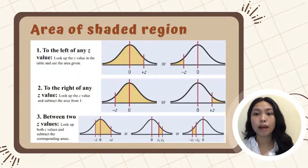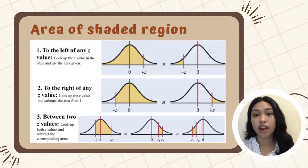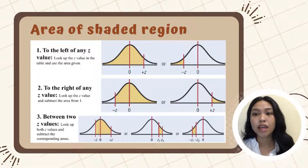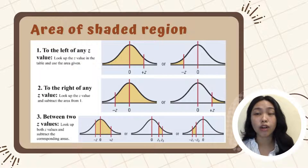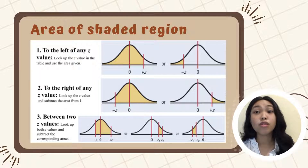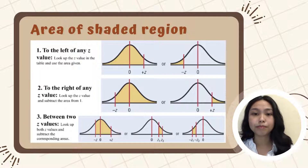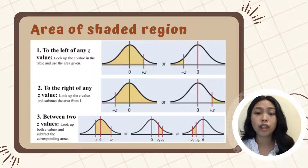Over here is a quick way or format to use in identifying which side or section is the shaded region in the area. First, kapag may term na 'to the left of,' 'lower than,' or 'less than,' ganito yung magiging representation niya. Para makuha yung area, kailangan lang natin hanapin yung corresponding Z-value dun sa table. Next, kapag 'to the right of,' 'greater than,' or 'more than,' you'll need to look for the corresponding Z-value sa table and then subtract 1 from it para makuha yung area. And lastly, kapag in-between naman, ganito yung representation ng shaded region — you'll need to get both of the Z-values and then subtract them from each other.